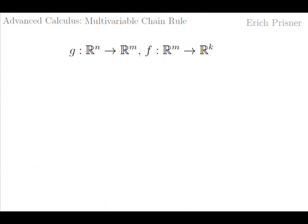We can only compose two functions g and f — applying g first and then applying f to the output of g — if the number of output values of g equals the number of input values of f. So we have g from n-dimensional space to m-dimensional space, f from m-dimensional space to k-dimensional space, and the composed function f∘g has n input values and k output values.